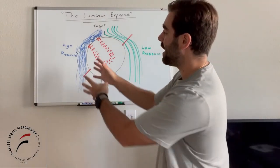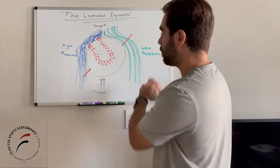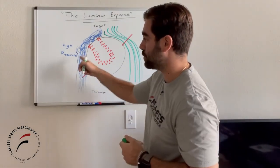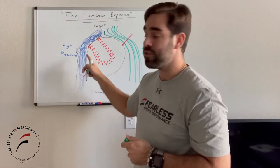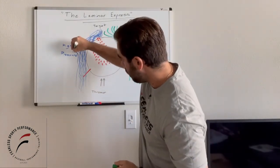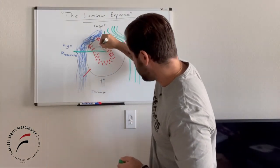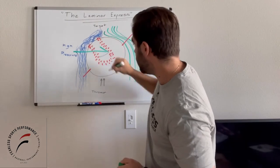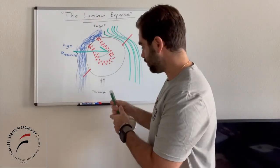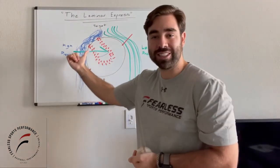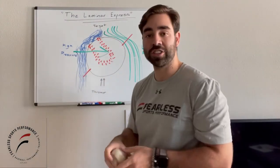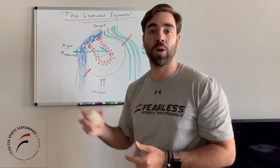When we have that high pressure system and the lower pressure system, what we're going to see is this force vector — this pushback from the high pressure system. And that pushback is going to resolve this force vector moving towards the lower pressure system. That's where you're going to see that movement towards the low pressure system, that big arm-side run.